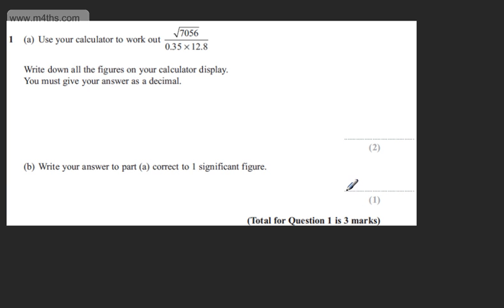This is question number one. In part A, it says use your calculator to work out the square root of 7056 divided by 0.35 times by 12.8. We must write down all the figures on our calculator display and we must give our answer as a decimal.